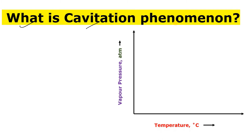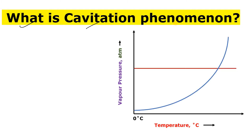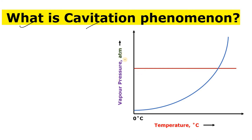So let's start the video. Here I have a graph — first of all we will see how any solution boils. In the case of water, we will see how water boils, and after that we will discuss about cavitation and link it with this graph. You can see here this is my vapor pressure on the Y-axis, with units in atm.